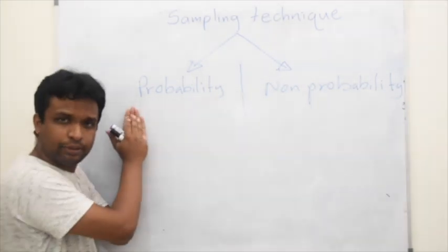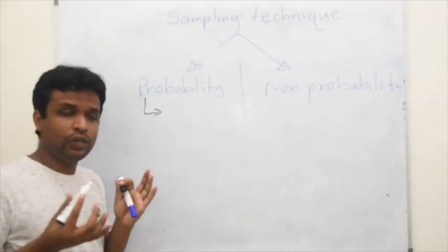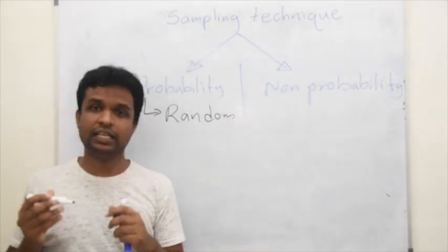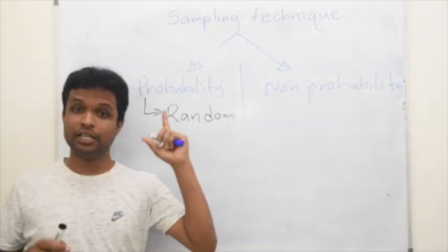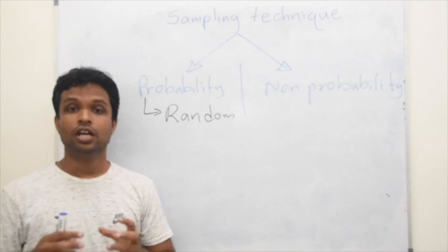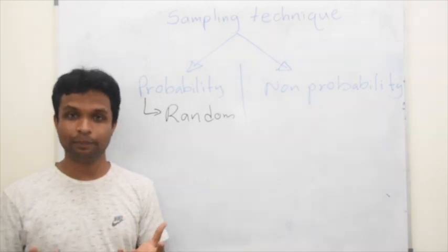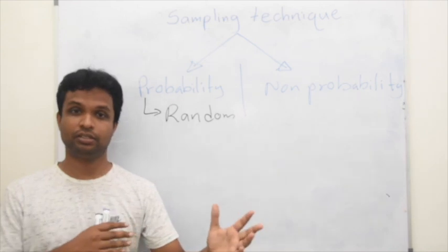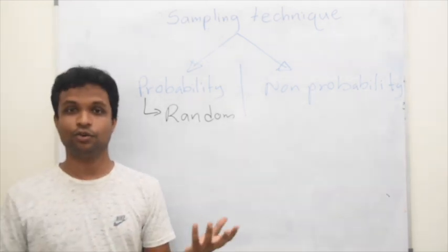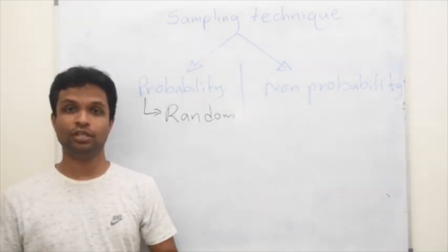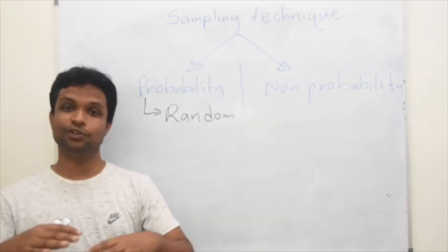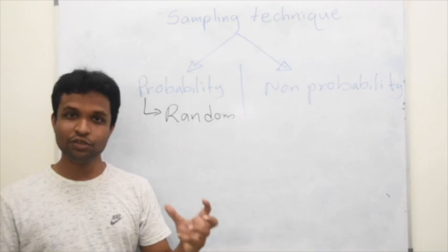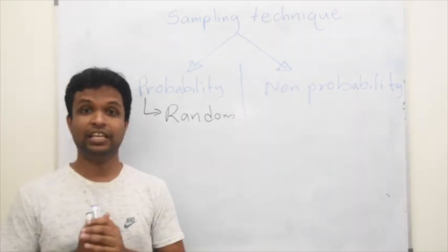In probability sampling, we involve a random process for selection of samples. If you take the previous example, if you need to calculate the mean and you select individuals for the samples like your friends or people who support you or people working in your environment, it may be biased. So we need to take them at random.